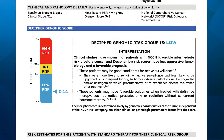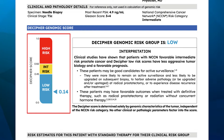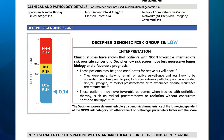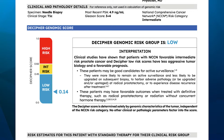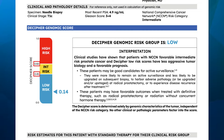In the Decipher genomic score section, you will find the Decipher risk bar on the left labeled with the Decipher score. The Decipher score is determined solely by the genomic characteristics of the tumor and not based on clinical or pathological parameters. The Decipher risk score is a number that goes between zero and one, and it's classified as one of three Decipher genomic risk groups — low, intermediate, or high — based on predefined cut points of 0.45 and 0.6.